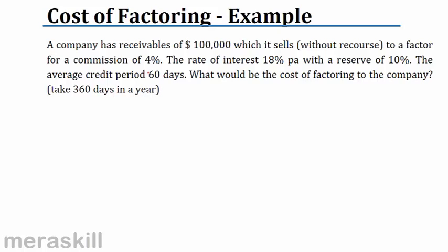Let us try this problem and exercise. A company has receivables of $100,000. It sells without recourse to a factor for a commission of 4%. The rate of interest is 18% per annum with a reserve of 10%. The average credit period is 60 days. What is the cost of factoring to the company? Take 360 days in a year. So what is my amount? First and foremost, the receivables are $100,000.